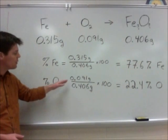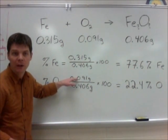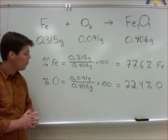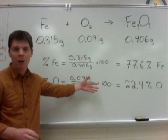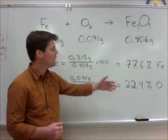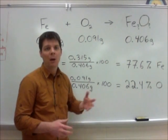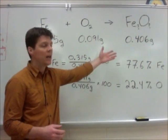The mass of the oxygen was calculated to be 0.091 grams. Dividing that by the total mass of 0.406 grams, multiplying by 100 to convert to a percentage, allows us to calculate a percent of oxygen being 22.4%.